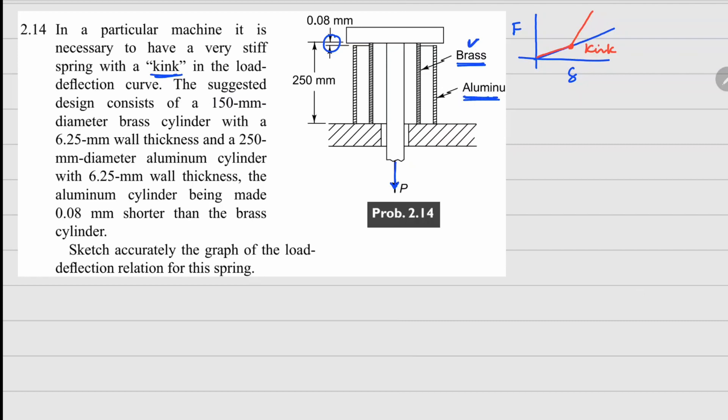But later on when this brass is compressed enough, then aluminum will also start playing a role there and that's why the slope will suddenly change. Now how do we analyze this? We can analyze this whole problem by idealizing both of these brass and aluminum cylinders with springs there.